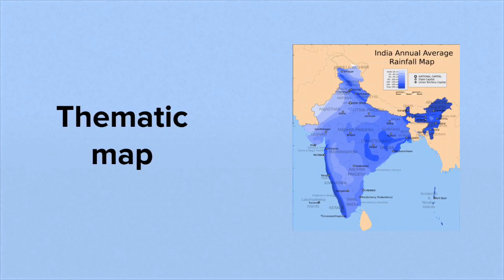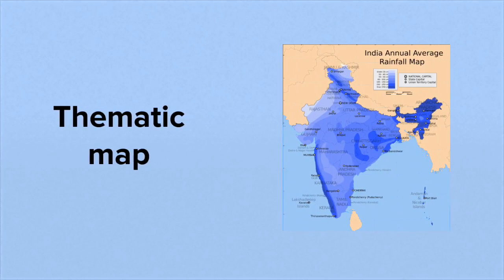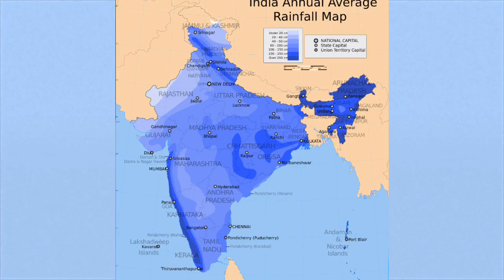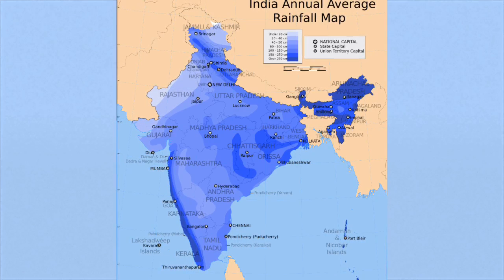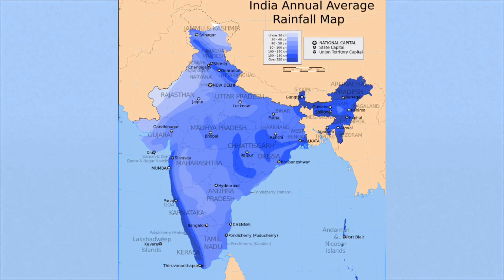This is a good example of a thematic map, India's annual rainfall. You can see here for example the darker shading showing the heavier rainfall they receive on the western coast.